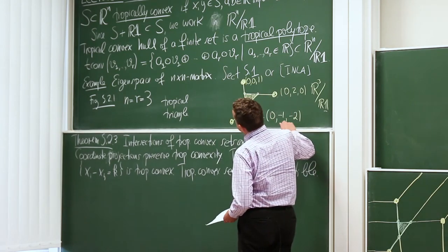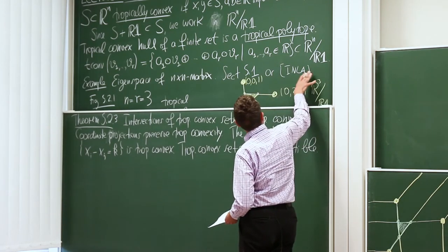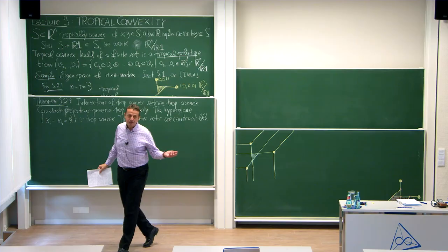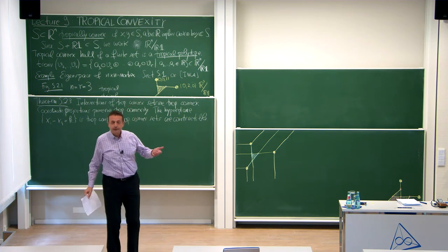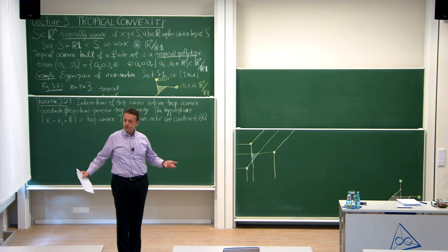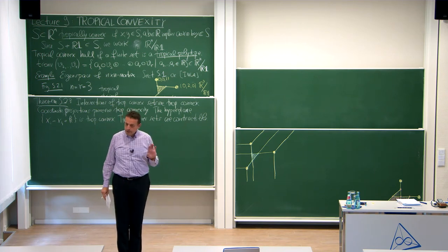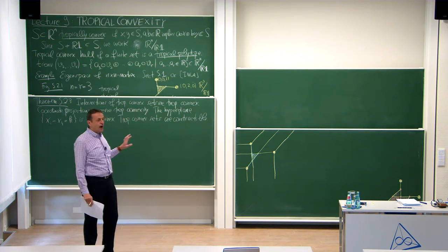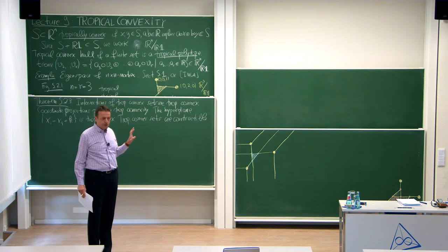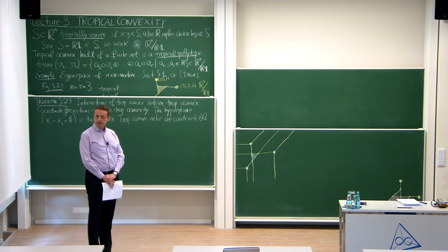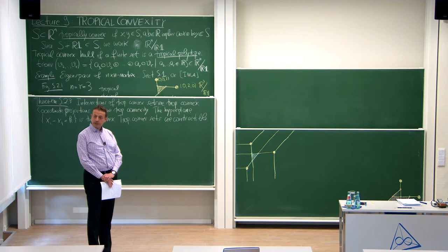When people see this for the first time, they're a little confused: why is this called a convex set? You might wonder, if it's the image of a matrix, shouldn't it be a linear space? Well, images of matrices under linear maps are not linear spaces. Linear spaces are more subtle — they require quite a bit of practice to compute. These things are called polytopes, and let me give you one motivation why.